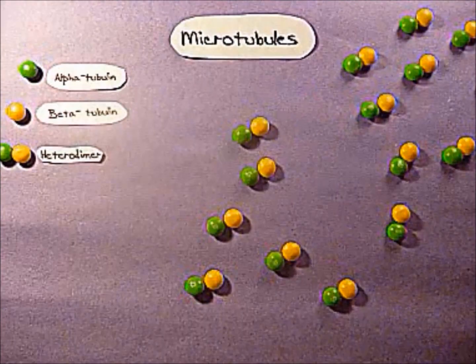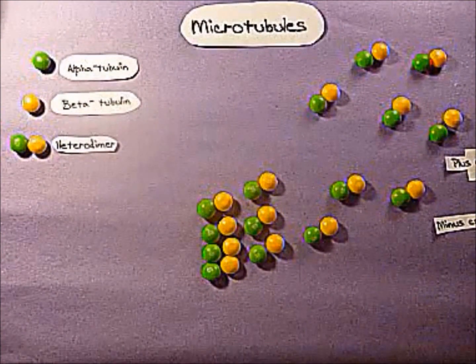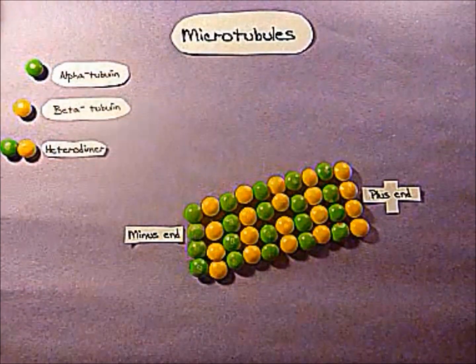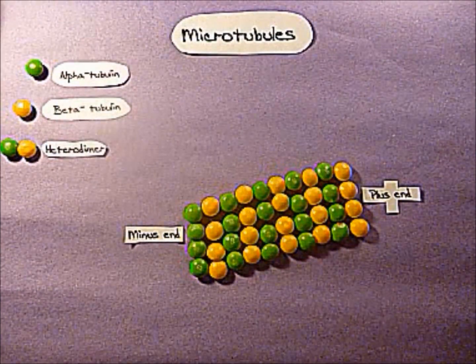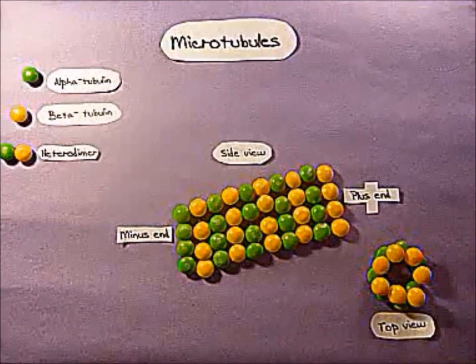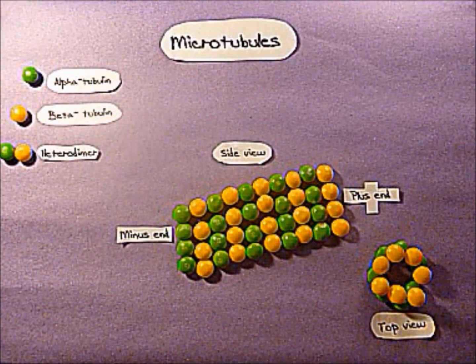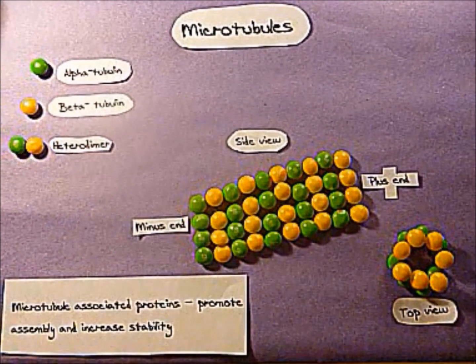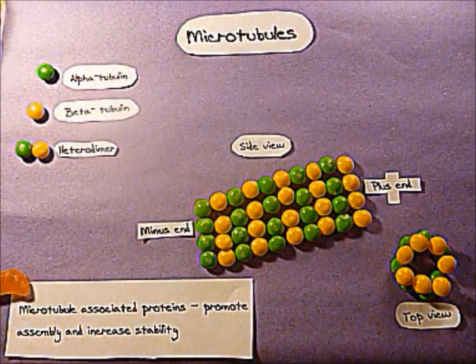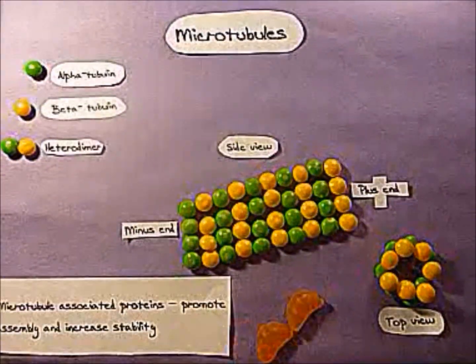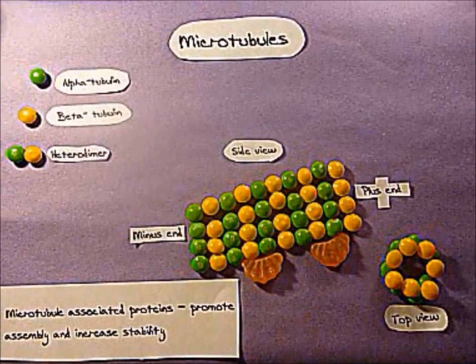Protofilaments show polarity. At the positive end there is rapid growth, and at the negative end there is slow growth. The outer diameter of microtubules is 24 nanometers and the walls are approximately 5 nanometers thick. The style of microtubule formation enables rapid assembly and disassembly, which is important to movement within the cell.